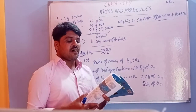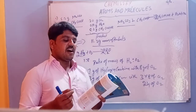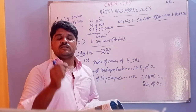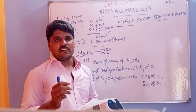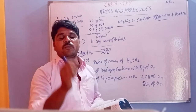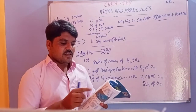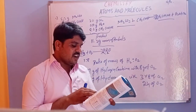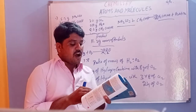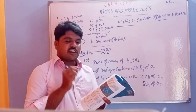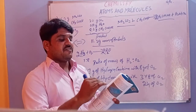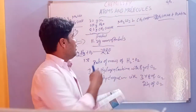Fourth question: which postulate of Dalton's atomic theory can explain the law of definite proportions? The law of definite proportions states that in a substance, elements are always present in a definite or constant proportion by mass. This is similar to the sixth postulate: the relative number and kinds of atoms are constant in a given compound.